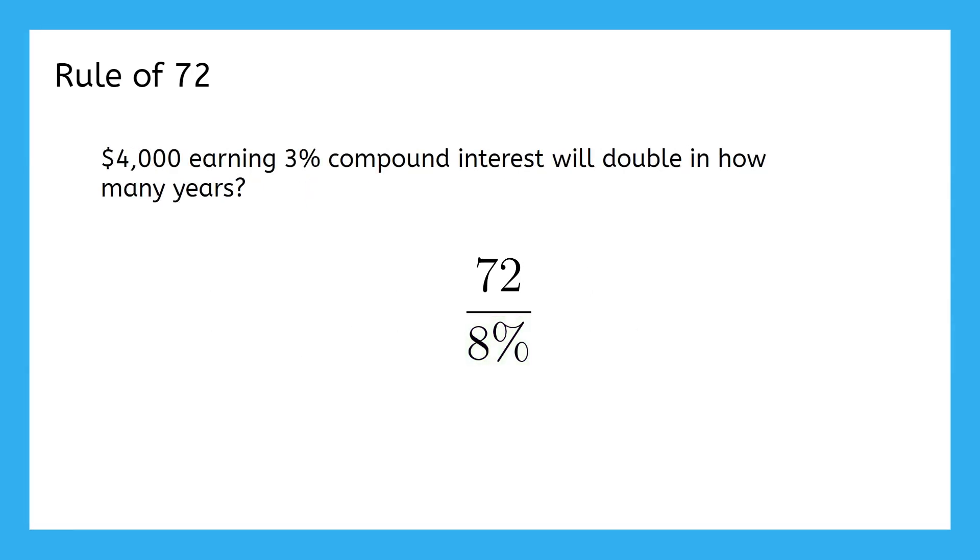Let's use the Rule of 72 for this example. If an account has an interest rate of 3%, what number would we use on top? 3% is closer to 2% than to 5%, so we'll drop 72 twice, down to 70. 70 divided by 3, since the interest rate is 3%, tells us this amount will double in approximately 23 years.